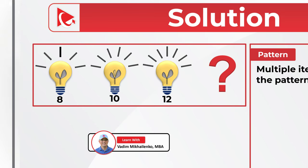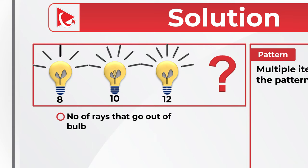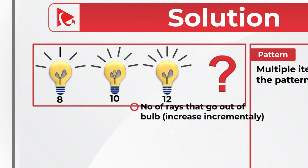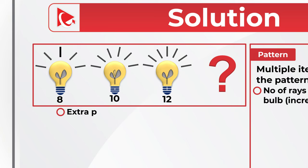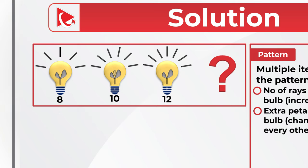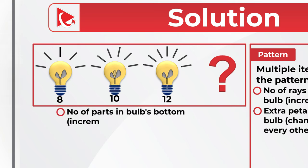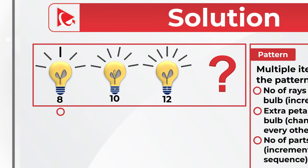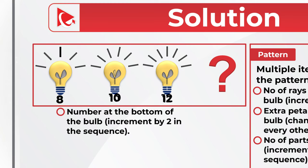The number of rays going out of the bulb increases incrementally. The extra petal leaf inside the bulb changes alternatively with every other bulb. The third pattern is that the number of parts in the bulb's bottom increments by one in the sequence. And the fourth pattern is that the number at the bottom of the bulb increments by two in the sequence.